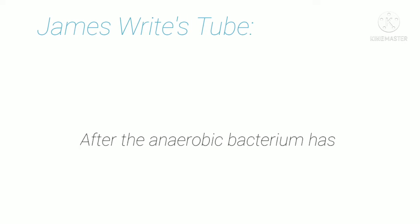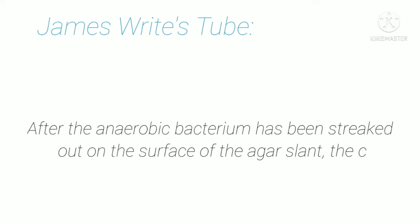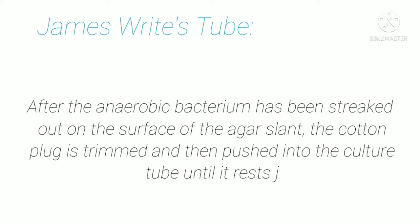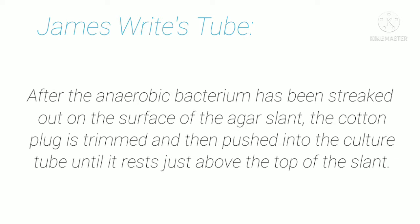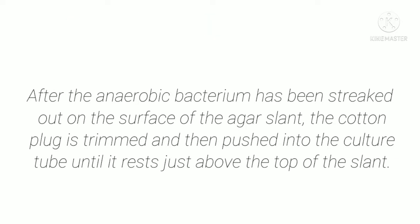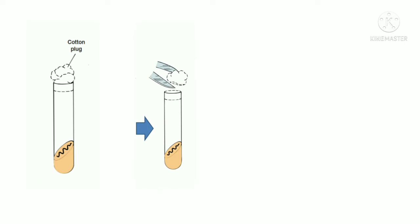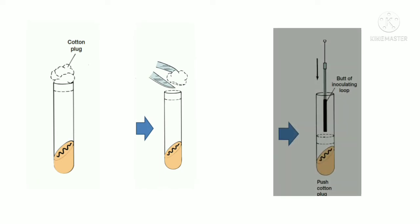James Wright was an American physician. After the anaerobic bacterium has been streaked out on the surface of the agar slant, the cotton plug is trimmed and then pushed into the culture tube until it rests just above the top of the slant. The anaerobic culture on the slant is inoculated with an anaerobic bacterium, and the cotton is cut and pushed down until it rests just above the slant surface.